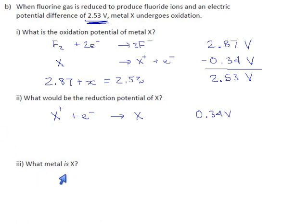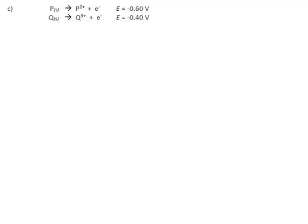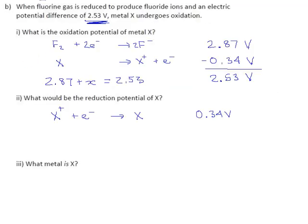And now they ask, what metal is X? Well, if it's 0.34 volts, right there, 0.34 volts suggests it might be copper. There could be other metals that have that same reduction potential, so we can't be 100% on this, but it is reasonable to assume it might be copper.